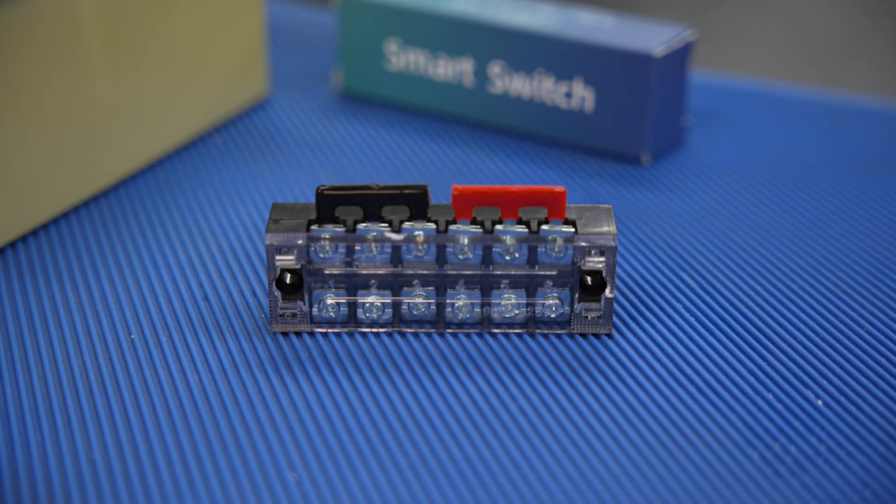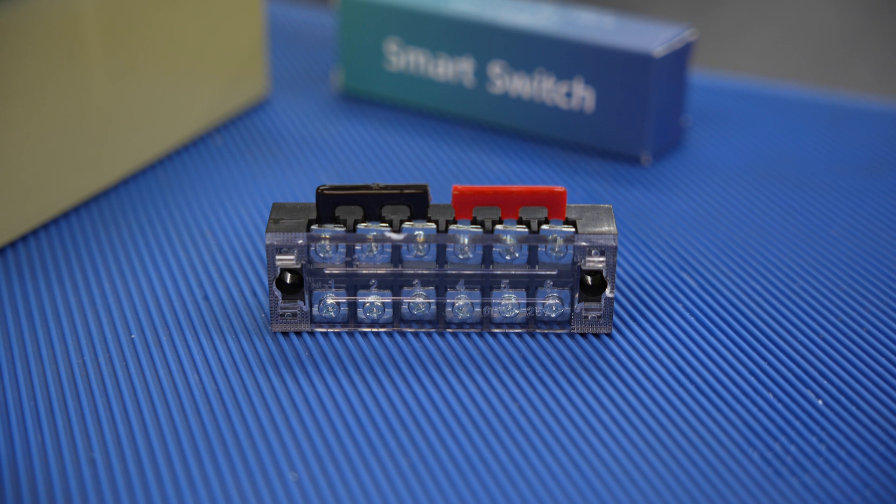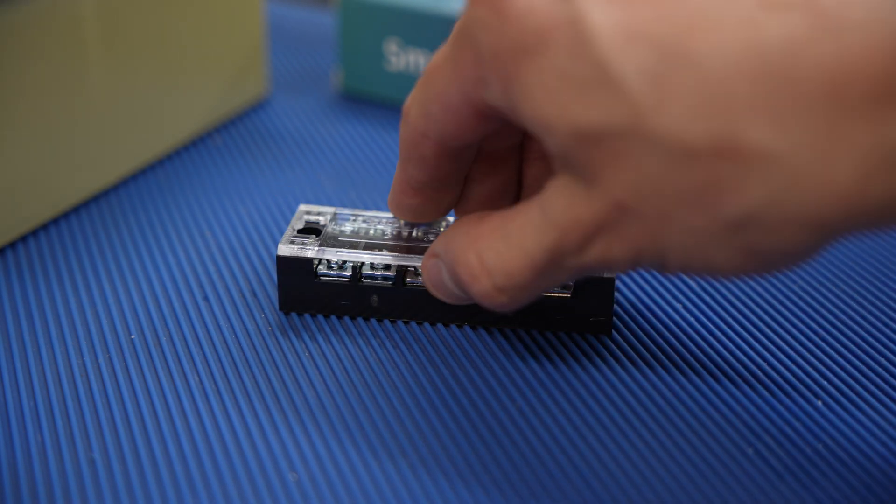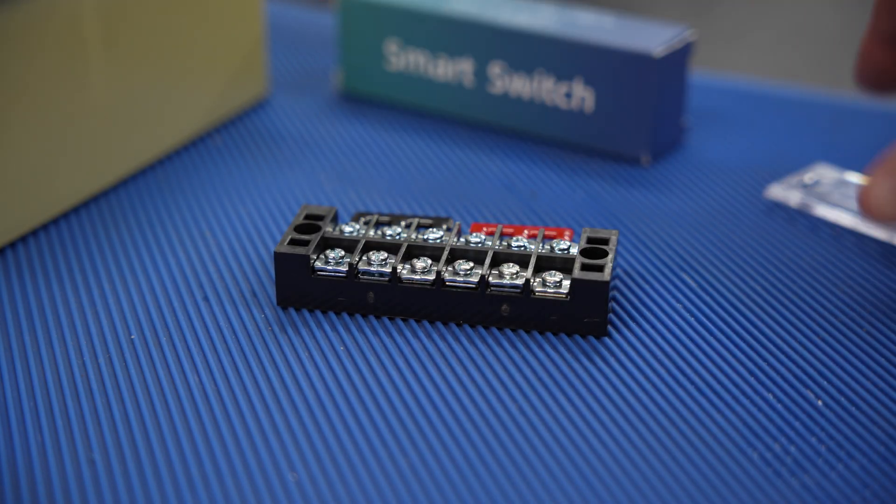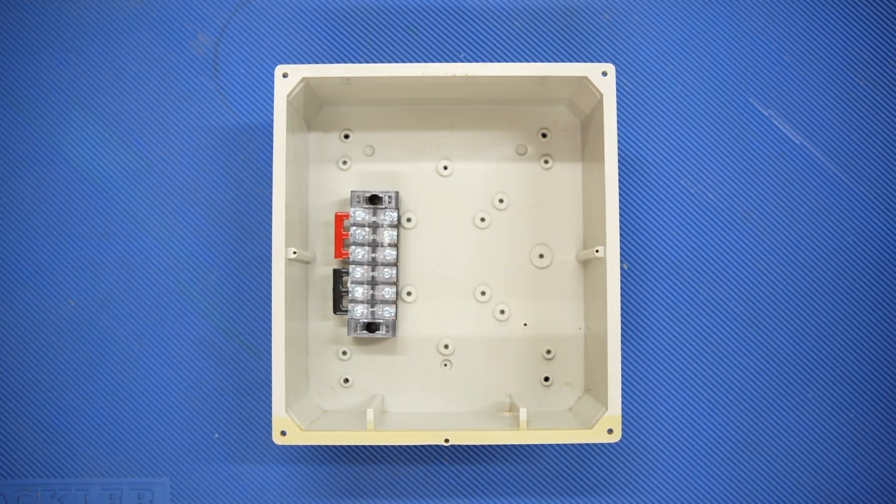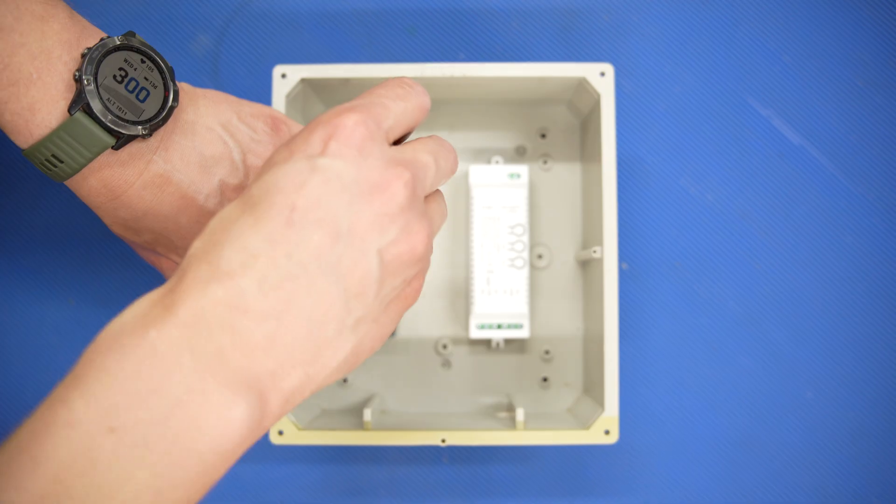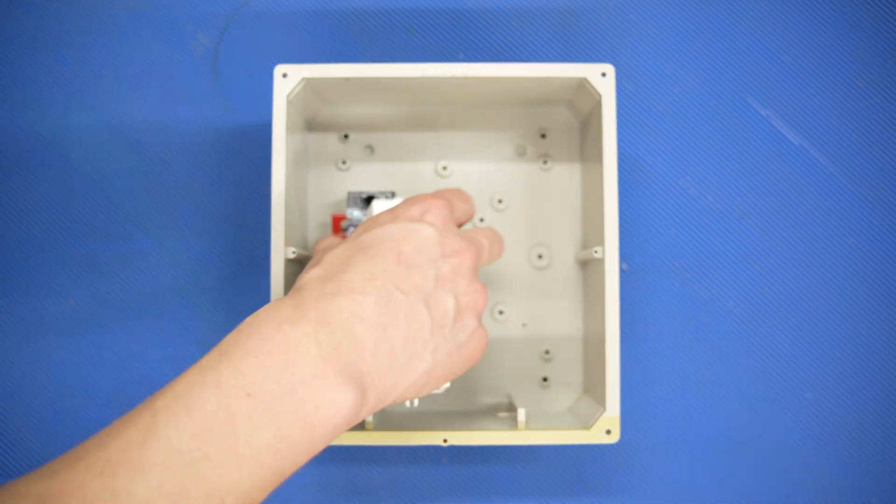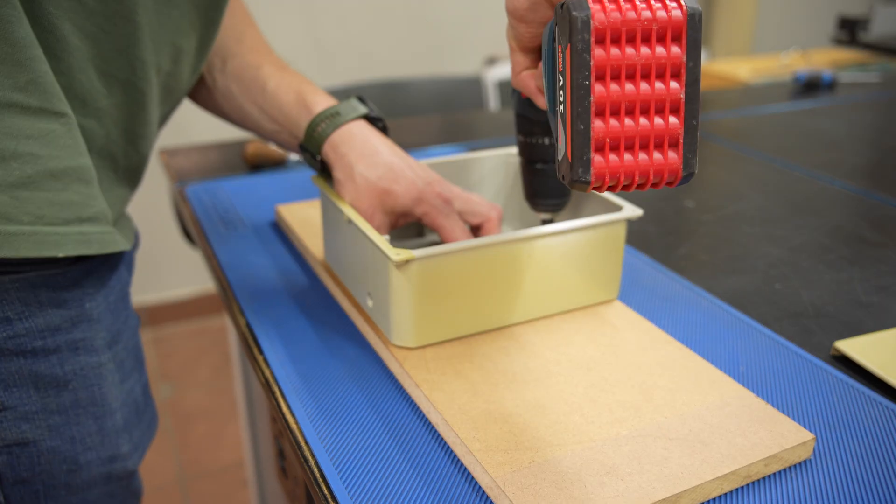To make it a little bit easier I'll be using a small terminal block to split the 24 volt power to the controller and solenoids. With the enclosure empty I marked out where the new components will be and drilled a few mounting holes and mounted everything.